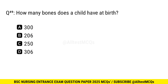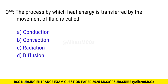Question No. 49: How many bones does a child have at birth? The correct option is A: 300. Question No. 50: The process by which heat energy is transferred by the movement of fluid is called? The right option is B: Convection.